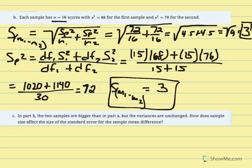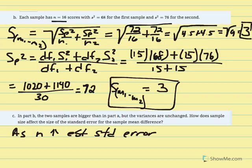Part C asks us to consider the effect of larger sample size. As n increased from 4 to 16, the estimated standard error decreased from 6 to 3. We can take this further: as n increases, estimated standard error decreases, and therefore the t-statistic increases. Larger t-statistics mean a greater likelihood of rejecting the null hypothesis.